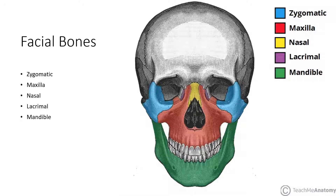There are also several facial bones. This is the zygomatic bone or your cheek. The maxilla is where your teeth are protruding from. There's your nasal bone, your lacrimal bone which is the tear duct, and of course the mandible which is your lower jaw.